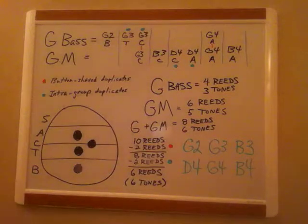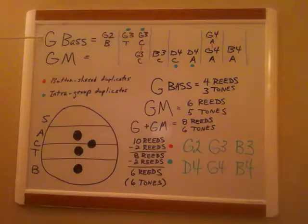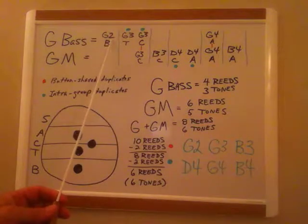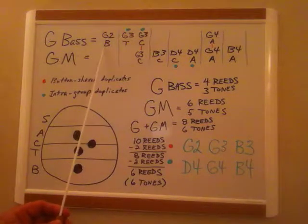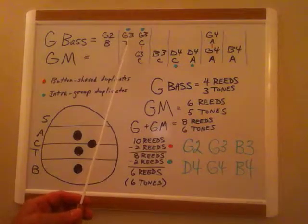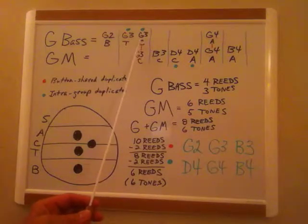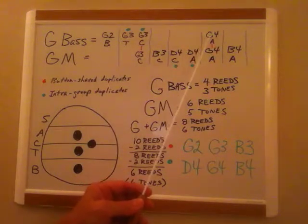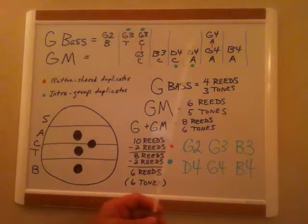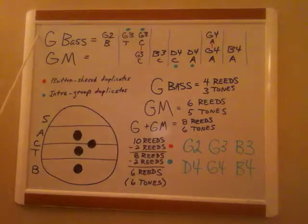So what we do is we look up here, we look at the G bass that we're playing, and when we press that button, we're employing the G2 reed in the bass reed set, we're using the G3 reed in the tenor reed set, the G3 reed in the contralto reed set, and the G4 reed in the alto reed set. In other words, this top row are the reeds that are employed when you press the G bass button or the G counter bass button.